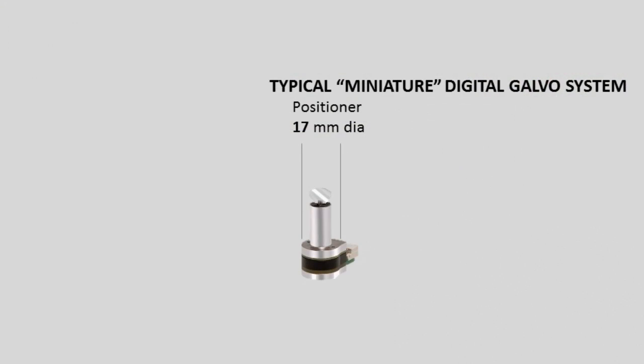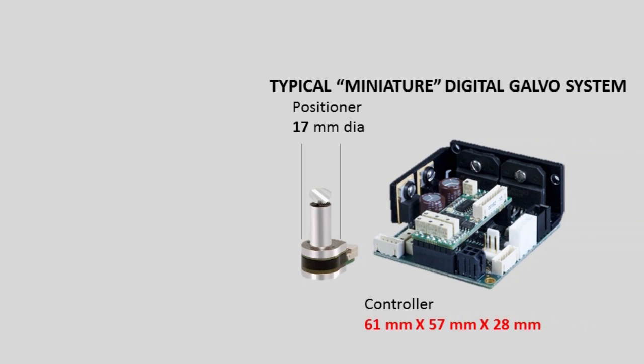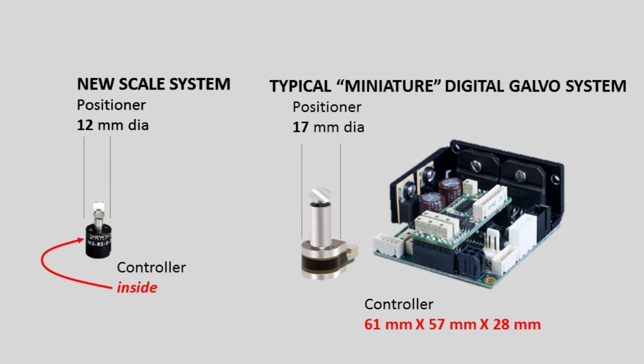Traditional miniature galvo scanners are available as small as 17mm diameter, but all require an external controller many times larger than the positioner. NuScale's positioner is less than 12mm diameter and needs no external controller.